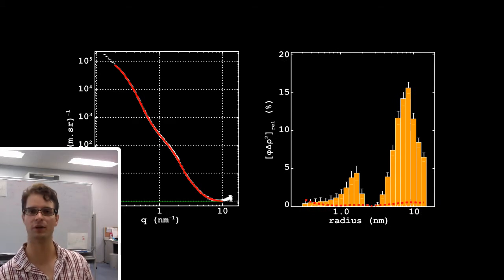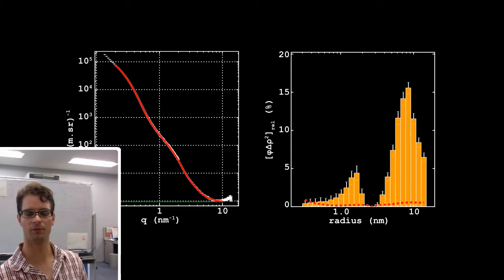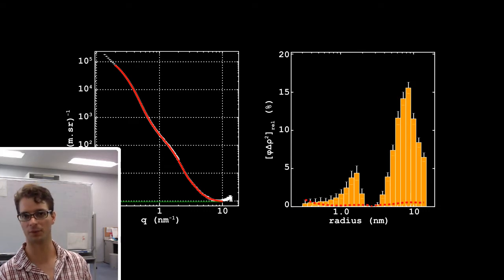But now we have a problem, because from small-angle scattering there is no information where the scattering comes from. So we don't know whether the scattering comes from the carbon, the magnesium oxide, or the iron carbide.